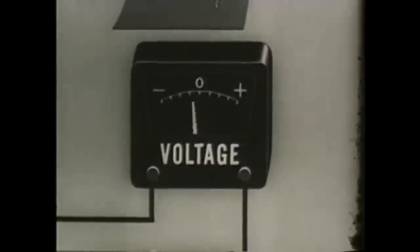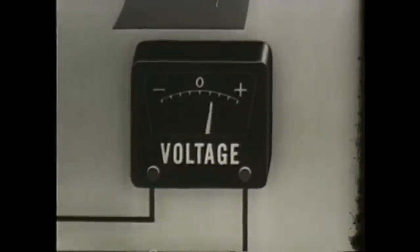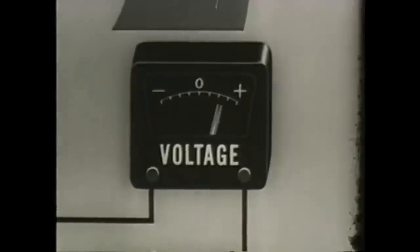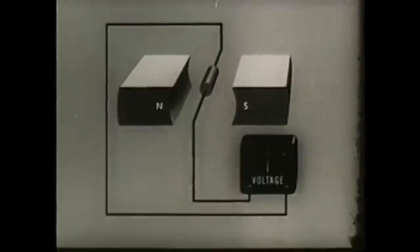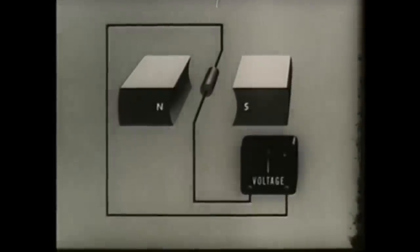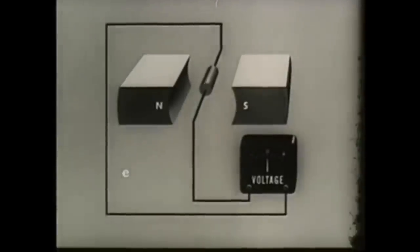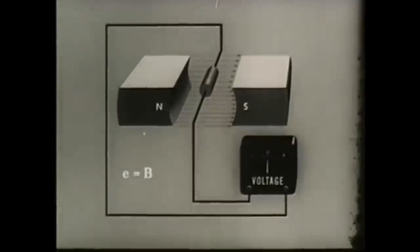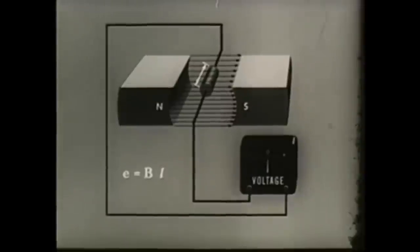The amount of EMF generated at any instant is determined by three factors. The strength of the magnetic field, that is the number of lines of force. The length of the conductor cutting the lines of force. And the velocity with which the conductor is turning. We can determine the amount of instantaneous EMF by a simple formula. The instantaneous EMF E equals B, the strength of the field, times L, the length of the conductor cutting lines of force, times V, the velocity of the conductor.